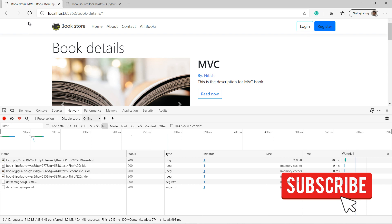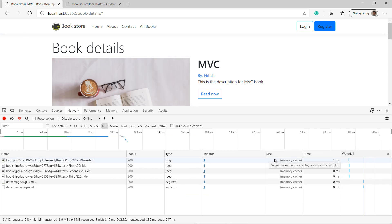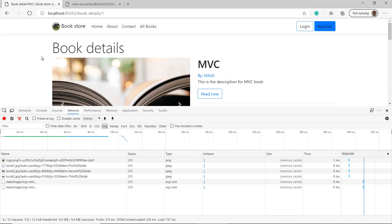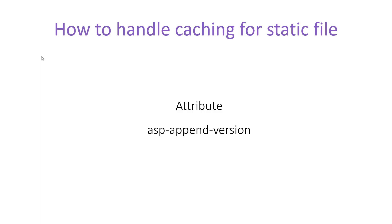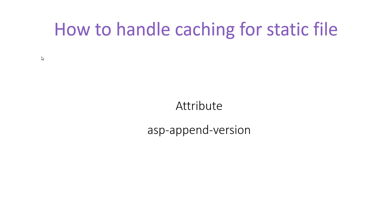After another refresh, the updated image comes from browser cache again, giving us both performance and updated data in the browser. Image tag helper has resolved our problem. One important note: image tag helper will only work if you are accessing images from your own server where your application is hosted. If you are using a third-party URL or external blob storage such as Azure Blob Storage and giving that URL in the image tag, image tag helper will not work in that scenario.